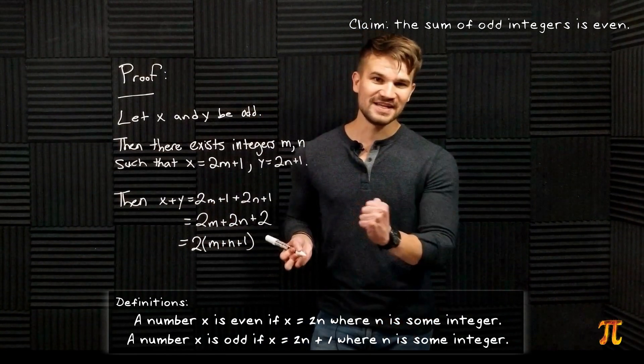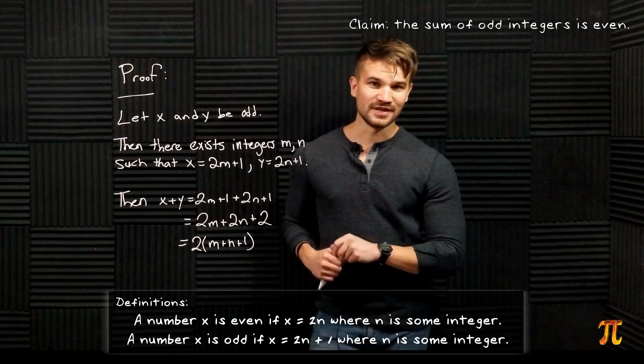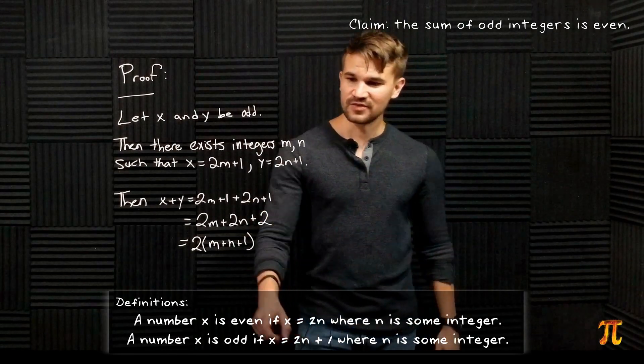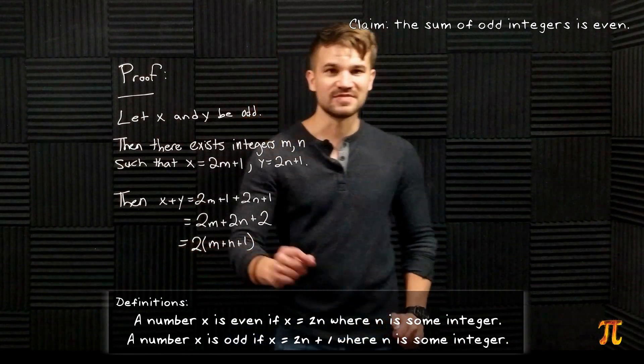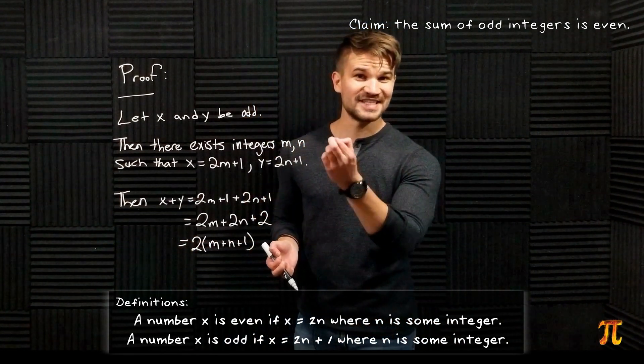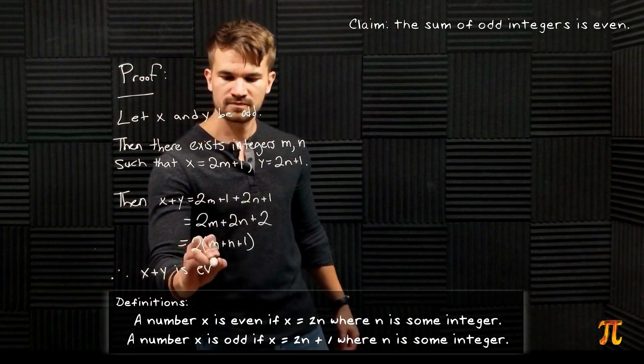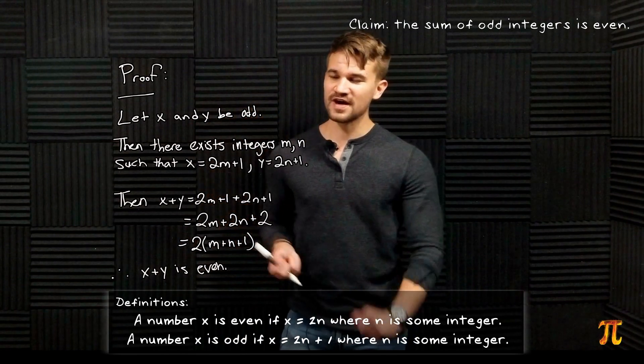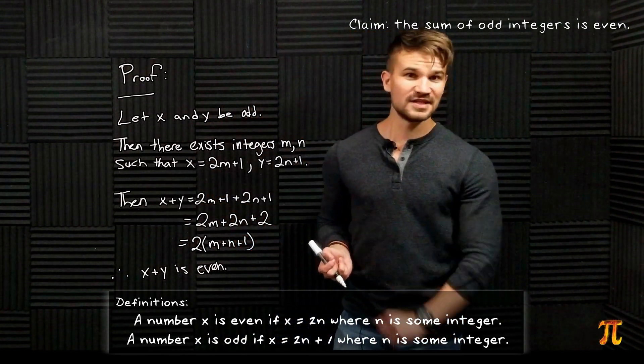Now since m and n are integers, their sum is an integer, and then we add one and we get yet another integer. So this whole thing is just some integer, and x + y is two times that integer. Therefore x + y is two times an integer, so it is even by definition. And that is a perfectly fine proof of the fact that the sum of two odd numbers is even.